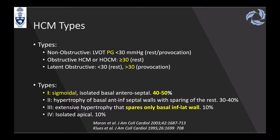There are four morphological types based on the location of hypertrophy. Type one, the most frequent, is sigmoidal and isolated to the basal anteroseptal wall. Type two, the second most frequent, involves the basal anterior and inferoseptal walls with sparing of the rest. Type three, 10% of cases, is extensive hypertrophy sparing only the basal inferolateral wall. Type four, also 10%, is isolated apical hypertrophy.